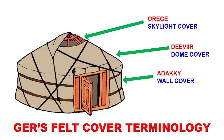In terms of felt cover terminology, the section that covers the walls is called adakka. The section that covers the dome is called dveir. And the one that covers the skylight is called uryge.